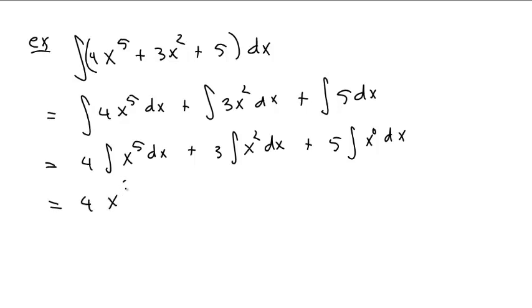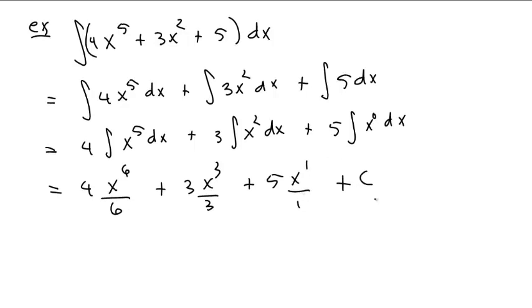This is 4x to the sixth over six plus 3x cubed over three plus 5x to the one over one plus the constant. And this simplifies down to 2 thirds x to the sixth plus x cubed plus 5x plus c.